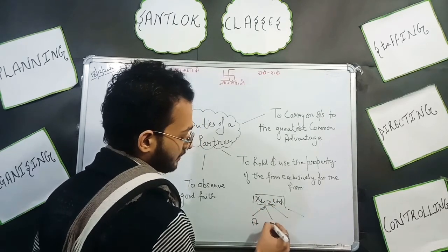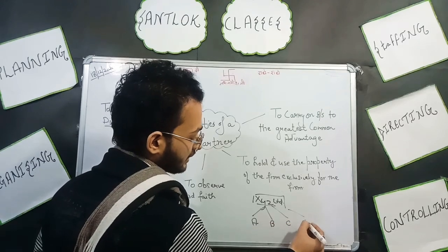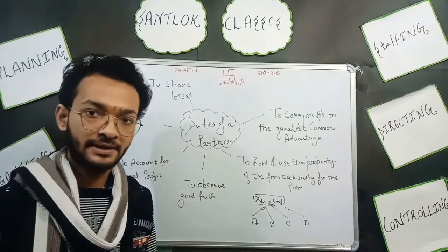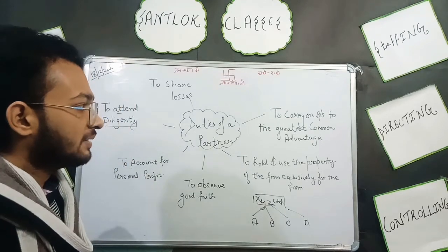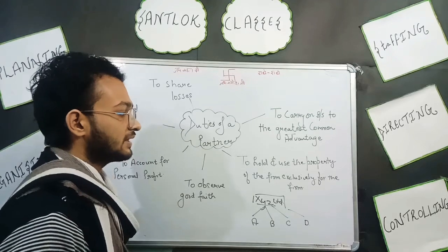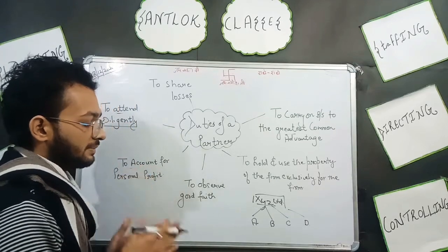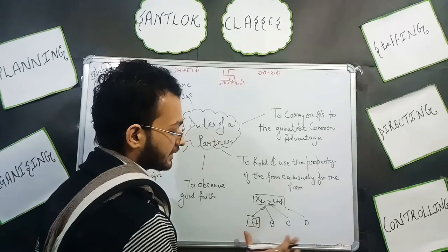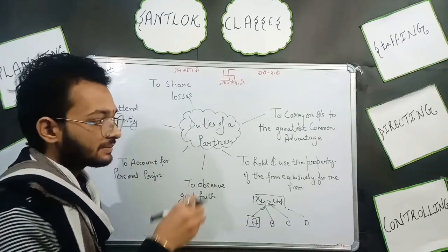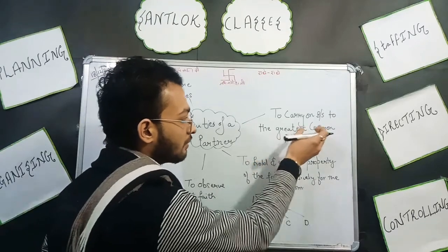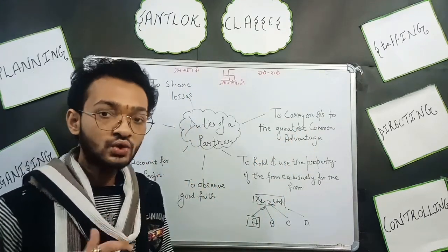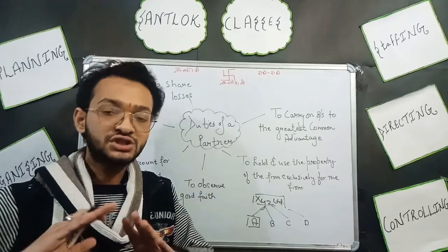Our partnership firm has 4 partners: Partner A, B, C, and D. First of all, the duty is to carry on business to the greatest common advantage. We have to carry on business and achieve this firm's advantage.